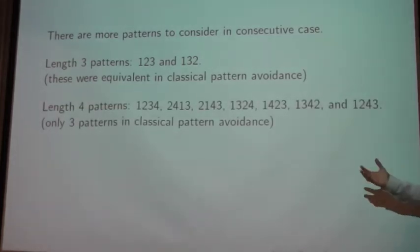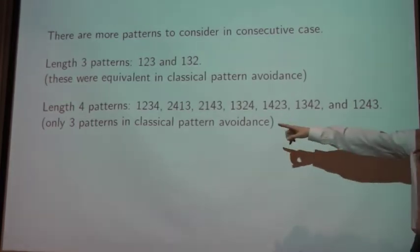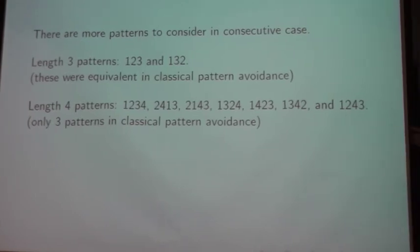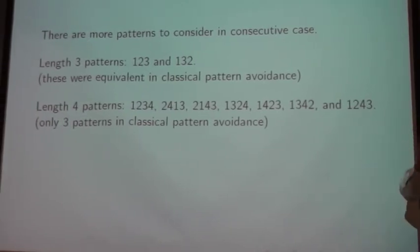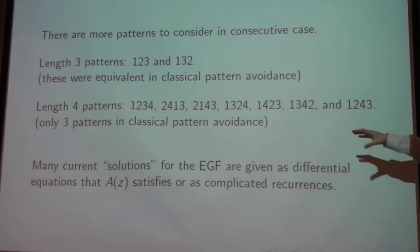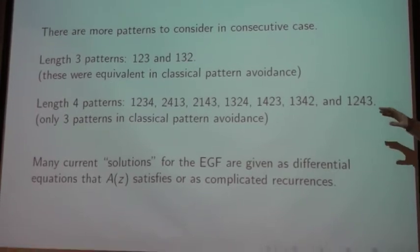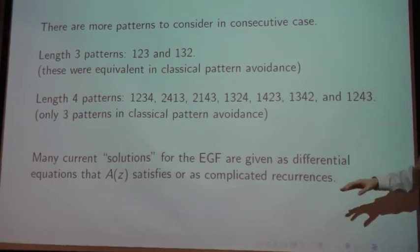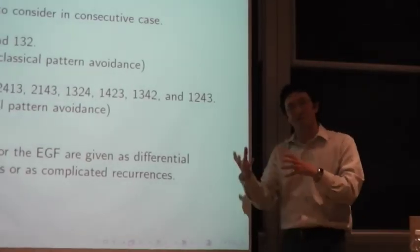For length four patterns, for the avoidance case, I have seven cases to consider for consecutive patterns. For classical pattern avoidance, it was just three cases. The one, two, three, four, one, three, four, two, and the one, three, two, four. So, it was just three cases in the classical pattern avoidance, but now there's seven cases for length four patterns. And there are some generating functions known. For the length three patterns, there's exponential generating functions that are known. For length four patterns, some of them are known. And even the ones that are known, a lot of times, it's given as some differential equation that the exponential generating function satisfies. Or as some other complicated recurrence.